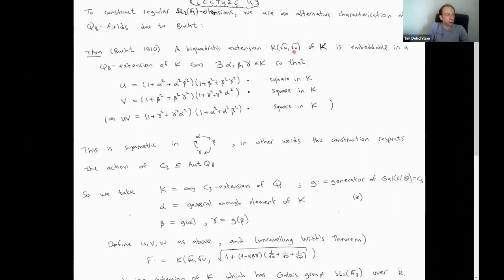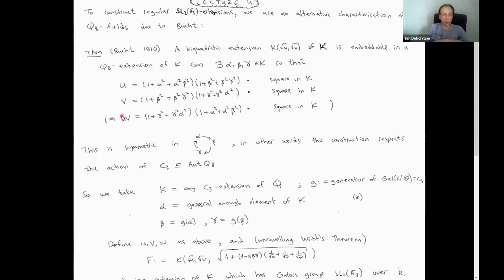This biquadratic extension — square root of u and square root of v — actually has three quadratic subfields given by √u, √v, and √(uv). His construction is very symmetric in u, v, and w, and respects the C3 symmetry: if we take α, β, γ permuted cyclically by C3, it will permute these three quadratics cyclically. That's exactly what we want, so that our quaternion extension respects the C3 action.